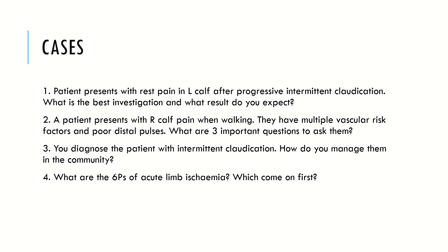Now for some cases. One: a patient presents with rest pain in their left calf after progressive intermittent claudication — what is the best investigation and what results do you expect? Two: a patient presents with right calf pain when walking, has multiple vascular risk factors and poor distal pulses — what are three important questions to ask? Three: you diagnose a patient with intermittent claudication in the community — how do you manage them? Four: what are the six P's of acute limb ischemia and which come first? If you're struggling, go back through the presentation as the answers are all there.